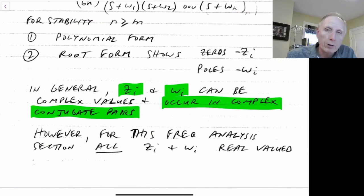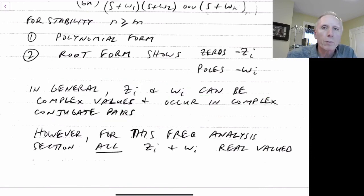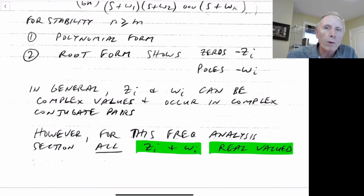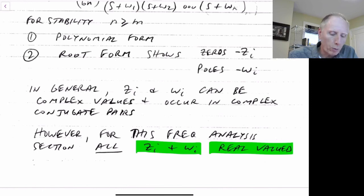If a pole or zero is on the real axis, it doesn't need a complex conjugate pair. For this frequency analysis part for circuits, we'll only be dealing with zeros and poles that are real-valued — on the real axis. We'll see that when we go to the feedback section, we can create poles and zeros which are not on the real axis. But if there's no feedback in our system, all poles and zeros will be on the real axis.